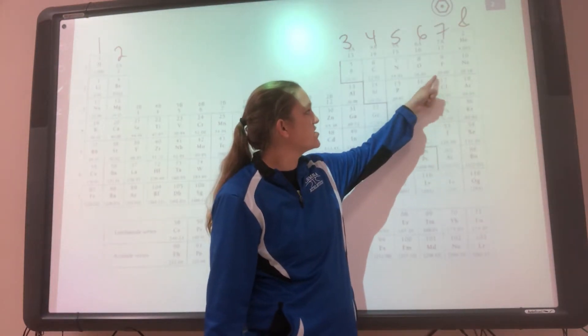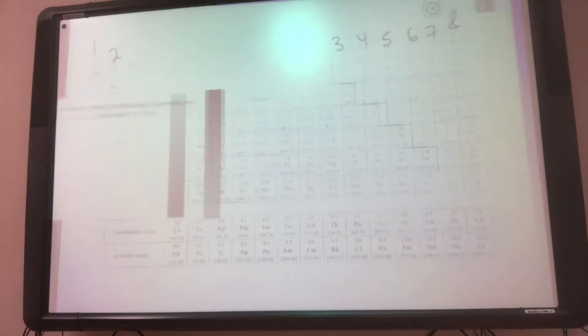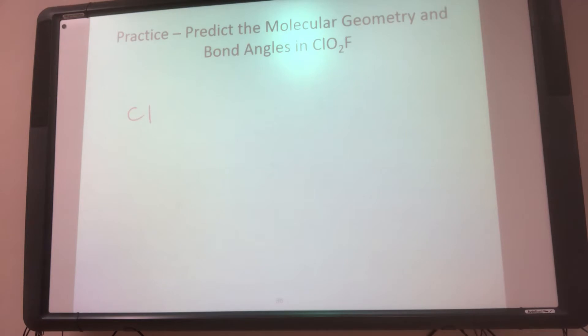So least electronegative is over and down. So Cl is going to go in the middle. So our Cl, an O, an O, and an F.